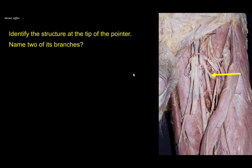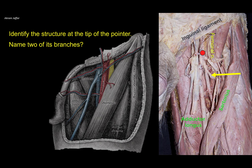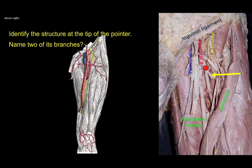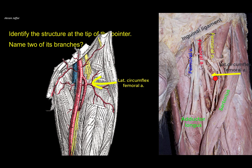Identify the structure at the tip of the pointer. Name two of its branches. Here again we are in the region of the femoral triangle. You can see the inguinal ligament, the adductor longus medially and the sartorius laterally, and the structures located in the triangle: the femoral nerve, femoral artery, and the femoral vein. The femoral artery gives quite a sizable branch from its lateral side — this is the profunda femoris or deep femoral artery. The profunda femoris supplies a branch going laterally through the tuft of branches of the femoral nerve, called the lateral circumflex femoral artery. The profunda femoris also supplies a medial circumflex, which is not shown here, and four perforators.